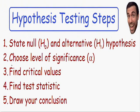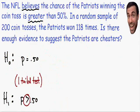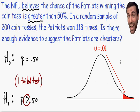Step number two says to choose the level of significance, which is written with the Greek letter alpha. The level of significance is just the area in the tail. Here I drew a picture of the normal curve, and the level of significance is the area in the tails.